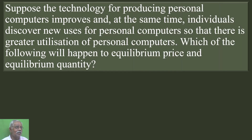Suppose the technology for producing personal computers improves, and at the same time individuals discover new uses for personal computers, so that there is greater utilization of personal computers. Which of the following will happen to equilibrium price and equilibrium quantity?